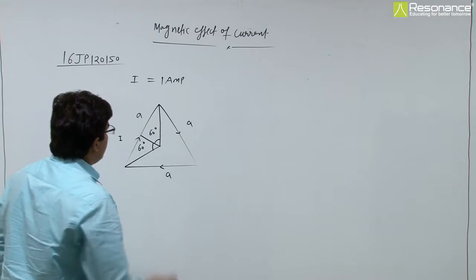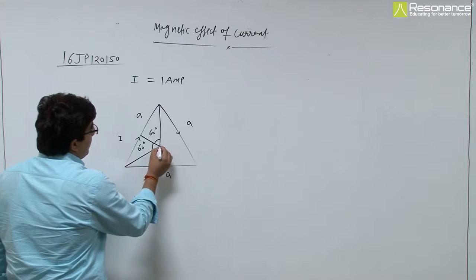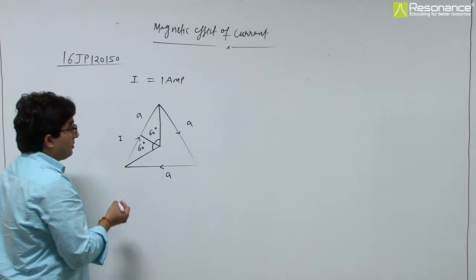This is a question. Current is flowing through an equilateral triangle, and we need to find the magnetic field at the center of the triangle.